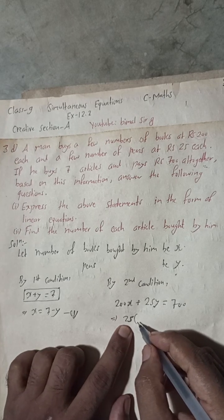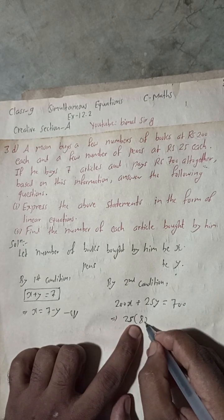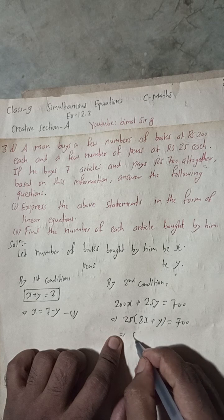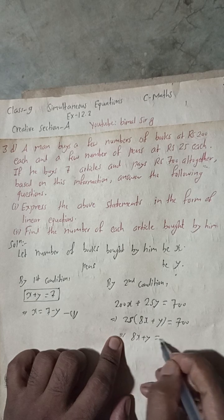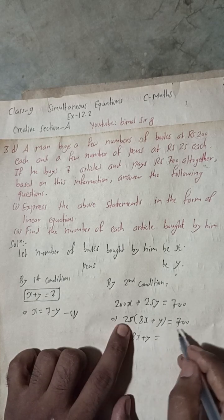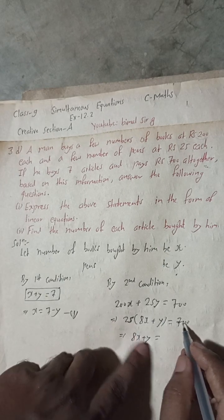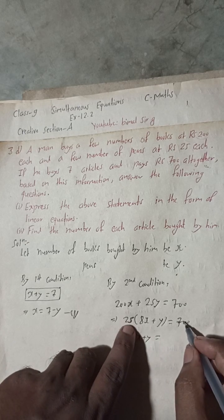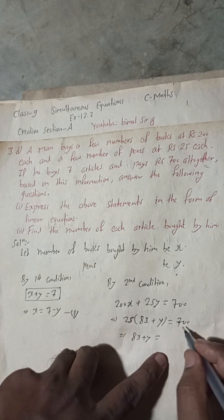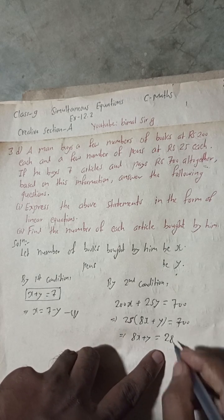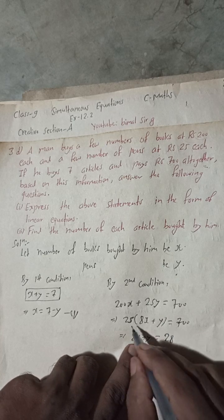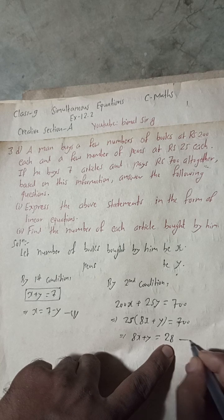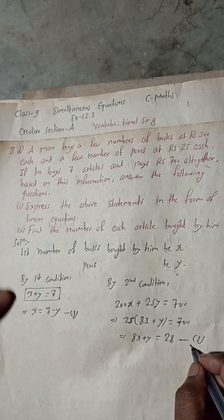Dividing by 25, we get 8x plus y is equal to 28. This is our equation number 2.